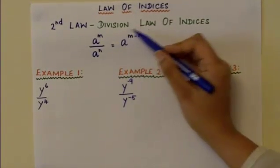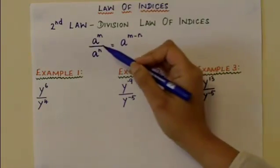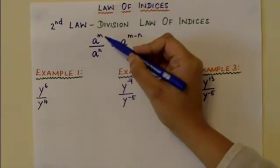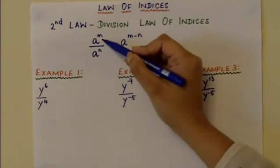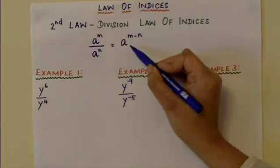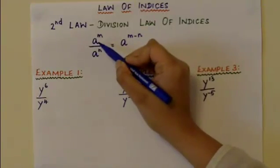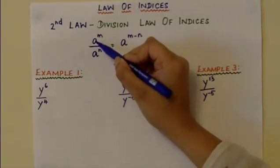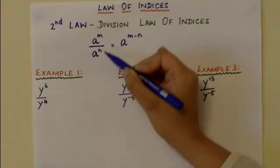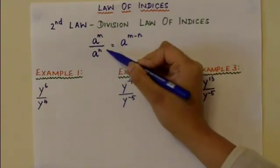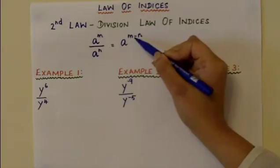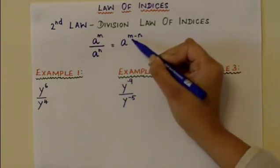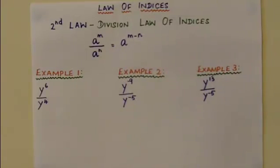This video is about the division law of indices. According to the division law of indices, if you have the same variable with different powers and if it is divided, then it becomes a to the power of m minus n. That is, a to the power of m divided by a to the power of n is equal to a to the power of m minus n, where m is the power of the numerator minus the power of the denominator.